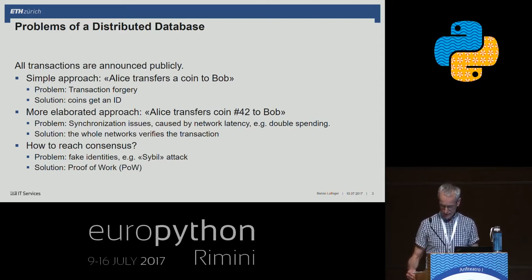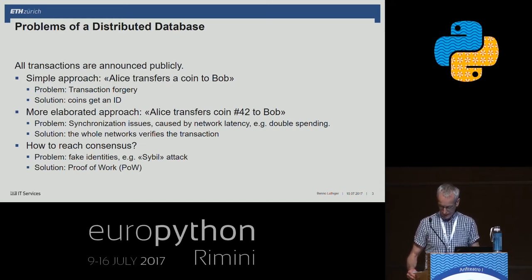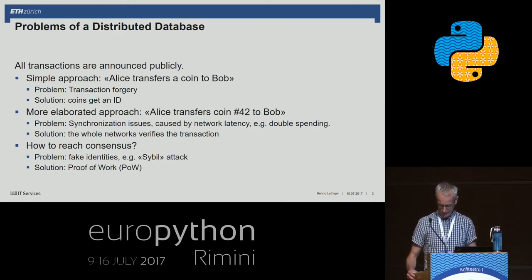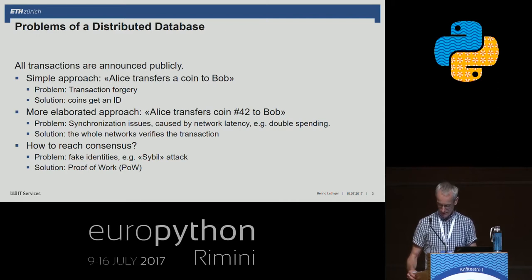To do this, the mining node has to perform some work. Thereby, the ability to verify transactions depends on the computing power and not on the number of identities. This principle is called proof of work.